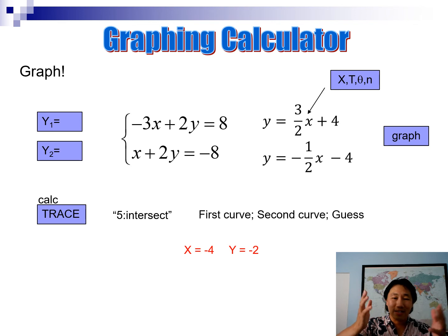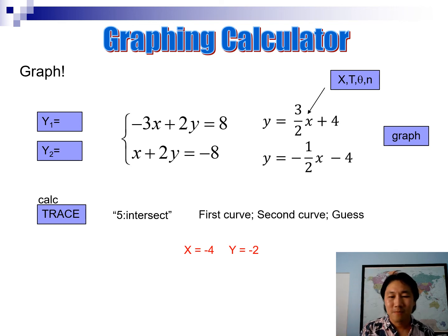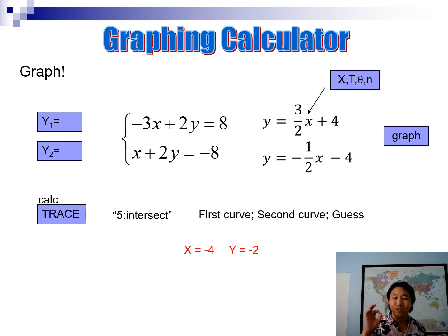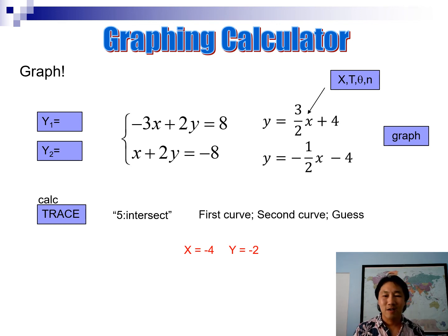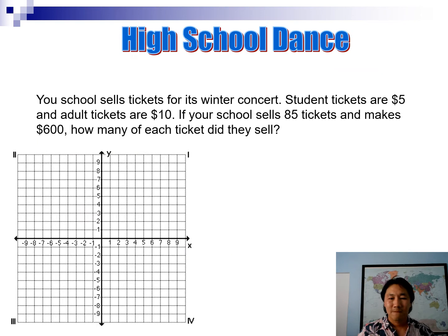After pressing Enter for the guess, the calculator should give you the answer: negative 4, negative 2. Try it — it's the first time we're using the calculator this way but we'll be using it a lot. Practice it because we'll soon have more complicated equations where the answers won't be nice whole numbers but will have lots of decimals.